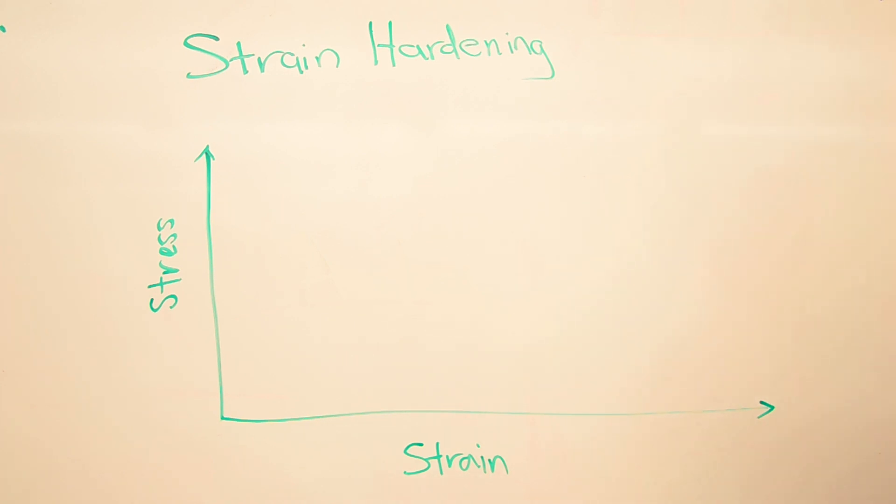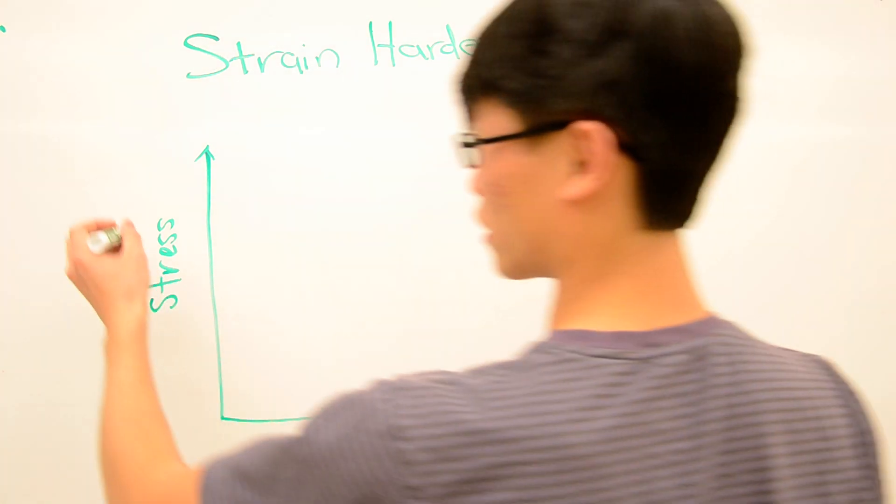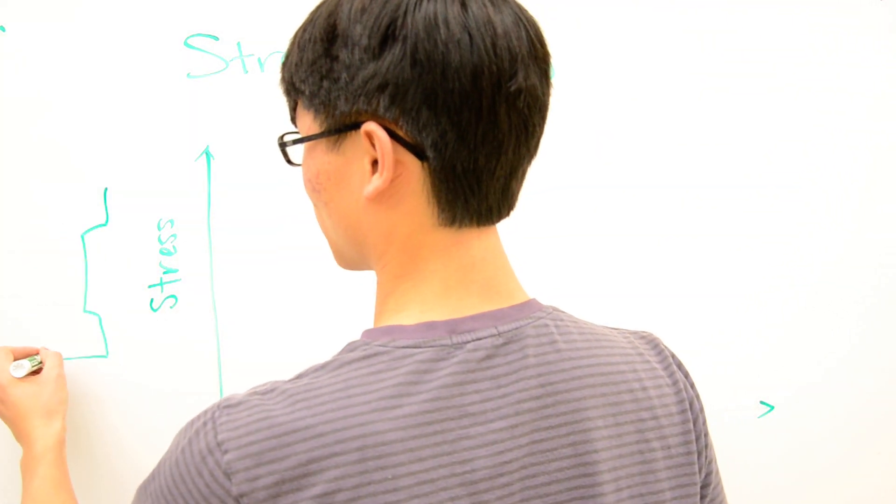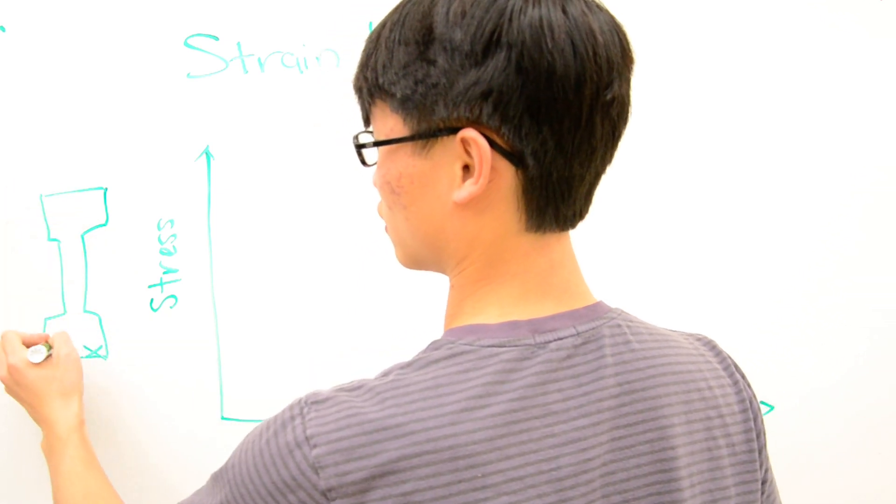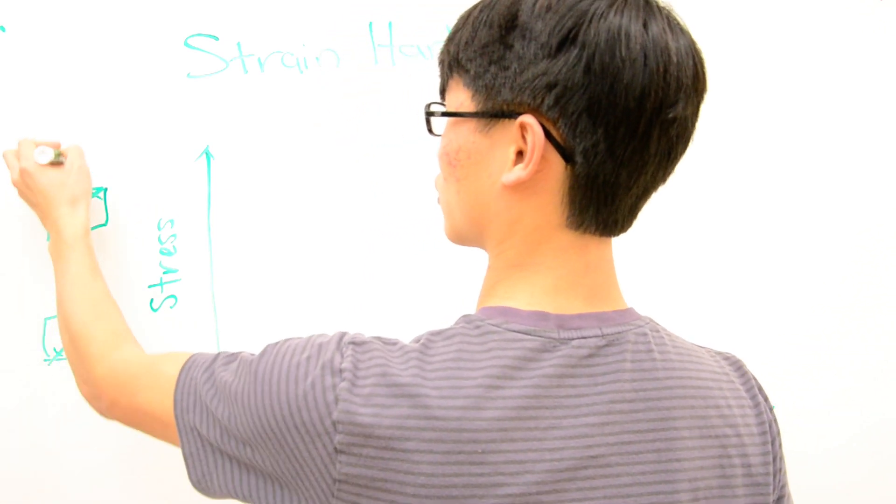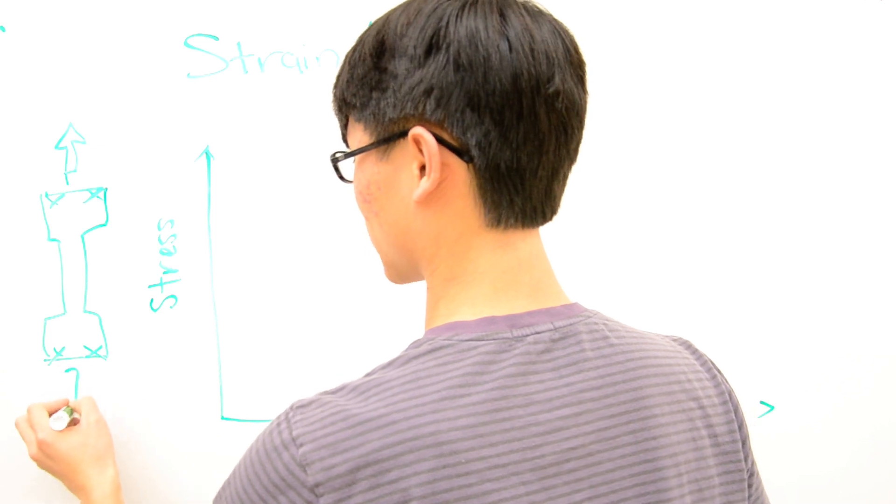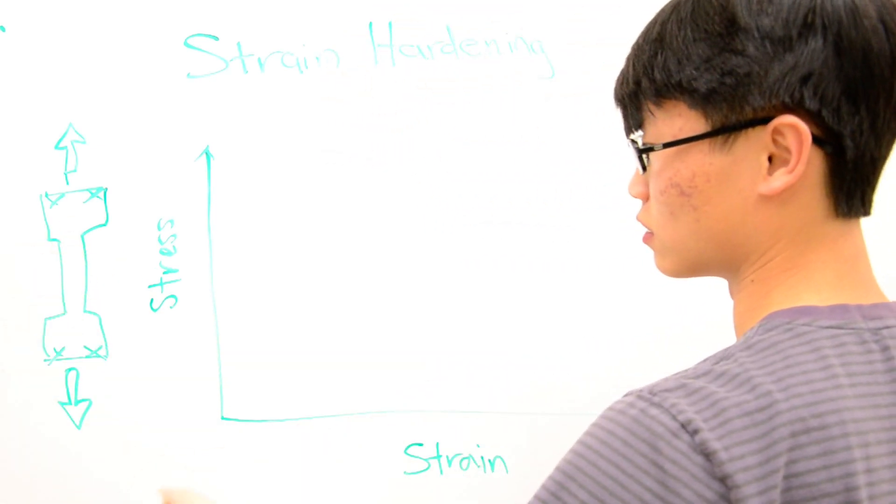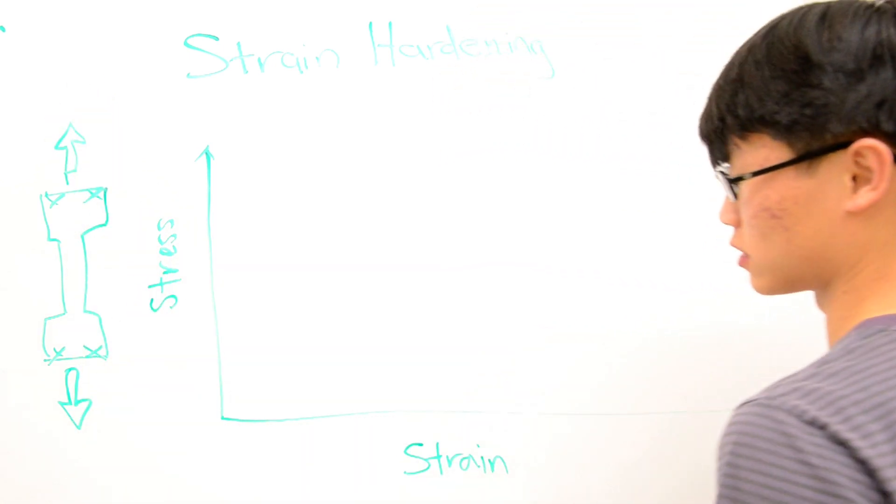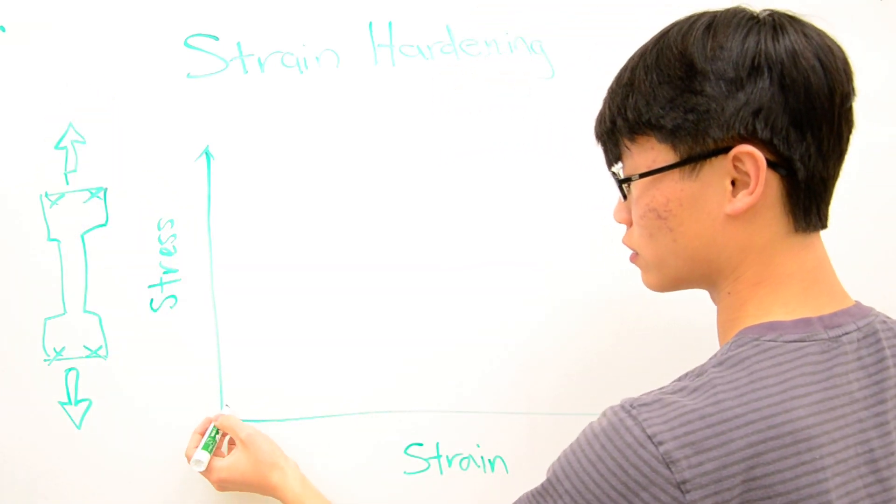So in a previous video, we looked at just basic stress and strain, looking at some kind of specimen like a steel dog bone. Basically, if you attach these ends and you start to pull your specimen, then you'll start to see it elongate, and then you can measure the force based on the distance you pulled the specimen.